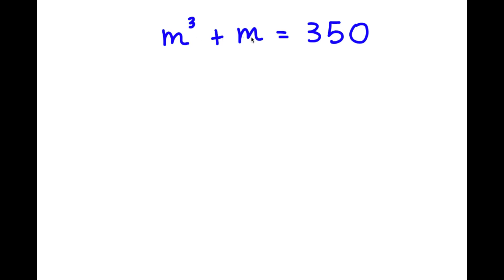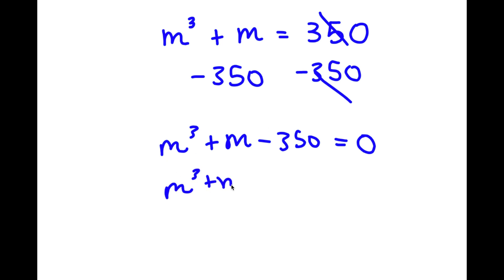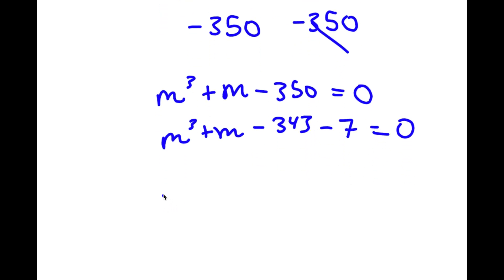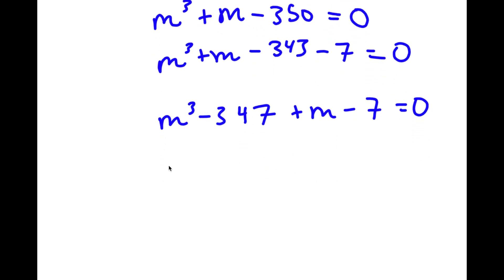All right, so in this problem I have m to the power of 3 plus m is equal to 350. The first thing I'm going to do is subtract 350 on both sides. So these two cancel out, and now I have m to the power of 3 plus m minus 350 is equal to 0. Now I can rewrite 350 as 343 plus 7, so I have m to the power of 3 minus 343 plus m minus 7 is equal to 0.